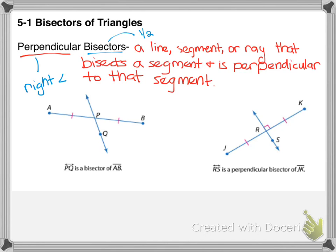Look at segment PQ here. It does bisect AB — you can see by these marks that it splits AB in half. But if you look at these angles, one is obtuse and one is acute, so it is not perpendicular to AB. Therefore, it is a bisector of AB, but it is not a perpendicular bisector because it doesn't create that right angle.